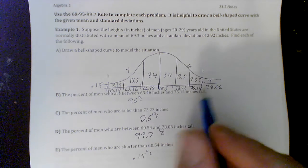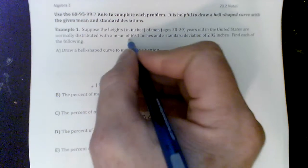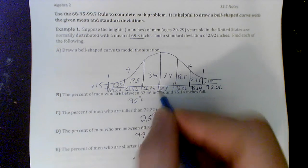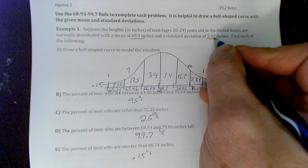And then they're going to give you the mean. And in this case, they say the mean is 69.3, which is right in the middle. And they'll give you a standard deviation of 2.92 in this case.